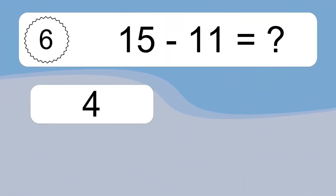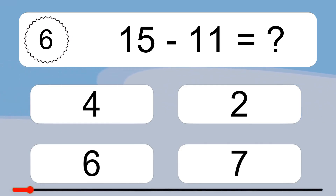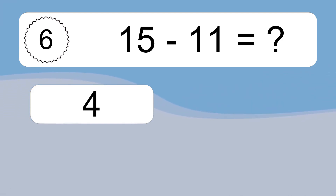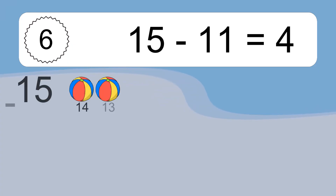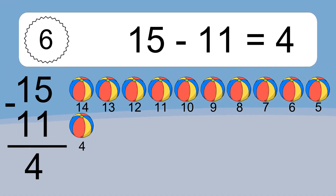15 minus 11 equals what? 15 minus 11 equals 4. Let's count it: 14, 13, 12, 11, 10, 9, 8, 7, 6, 5, 4.